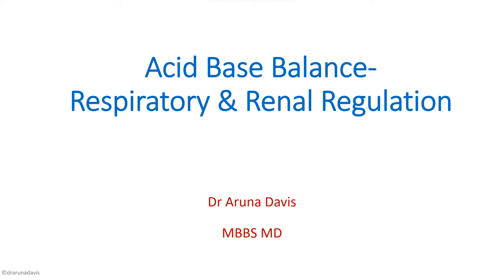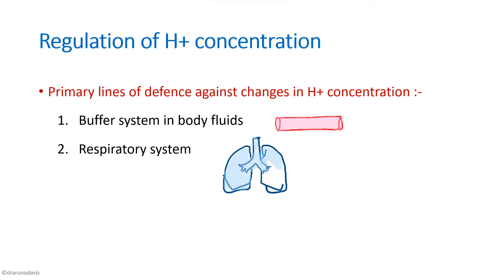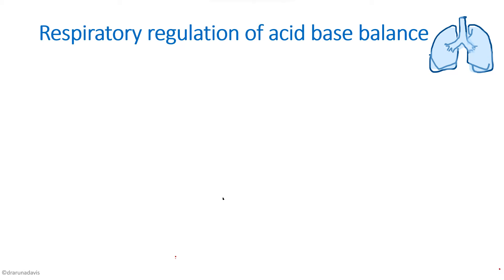In this video we are going to discuss acid-base balance, specifically the role of the lungs as well as the kidneys. There are three systems which work to maintain H+ concentration. The first is the buffer systems in body fluids, covered in a separate video. In this class we will discuss the respiratory system as well as the renal system. First, we will see the role of lungs in acid-base balance — respiratory regulation.